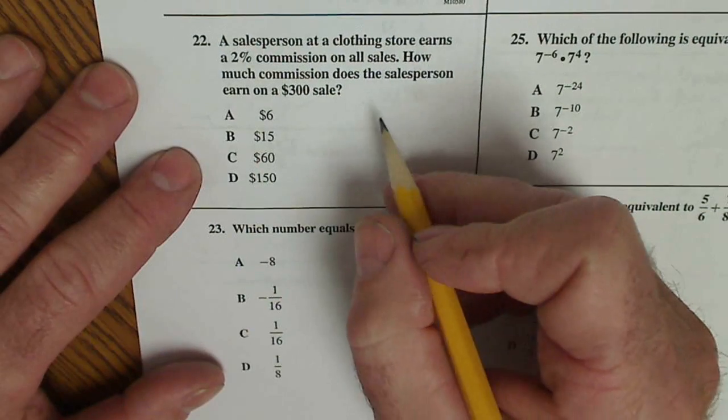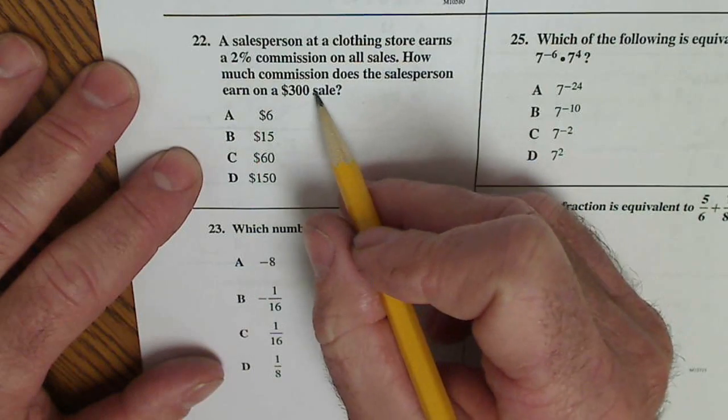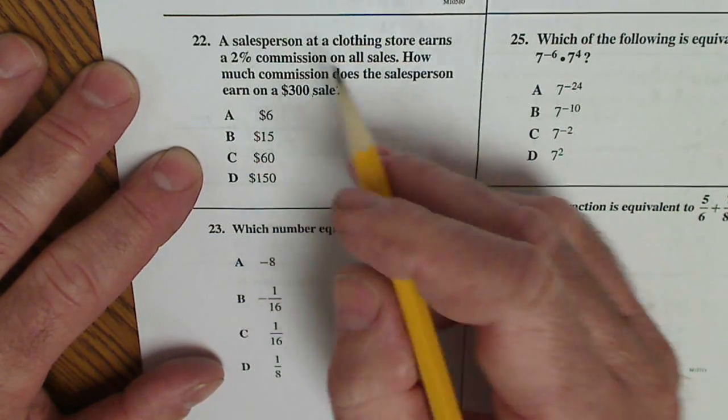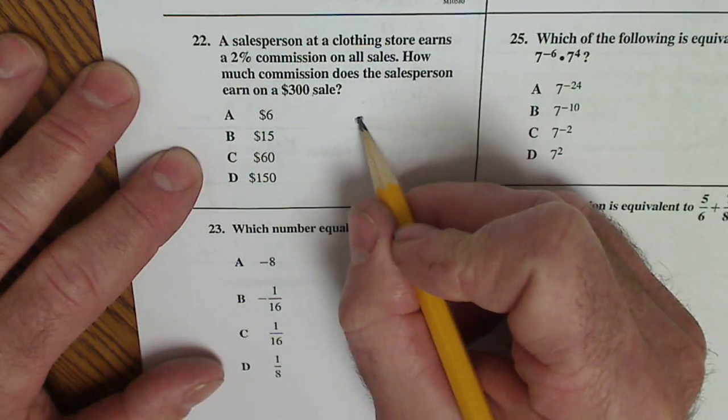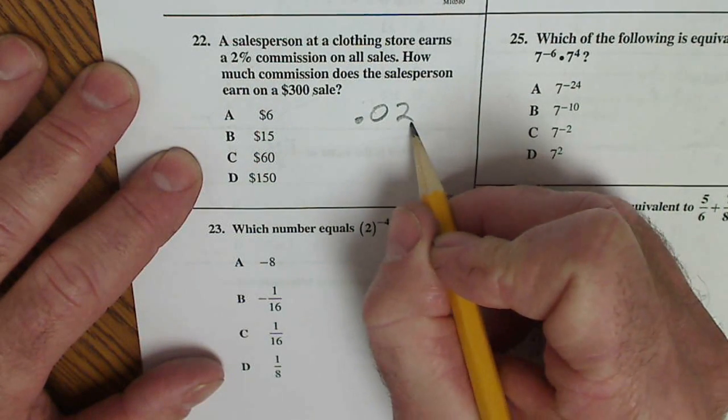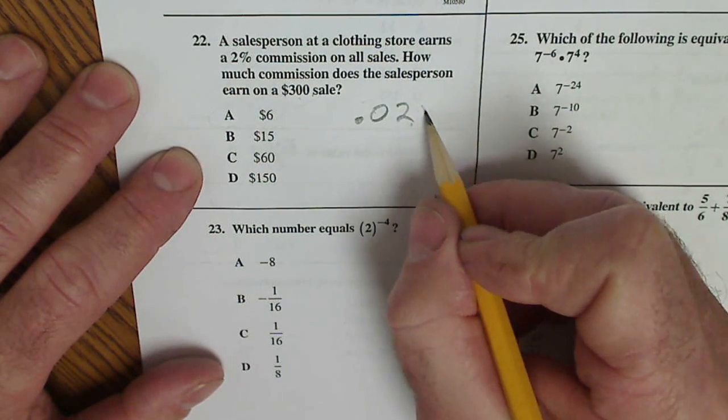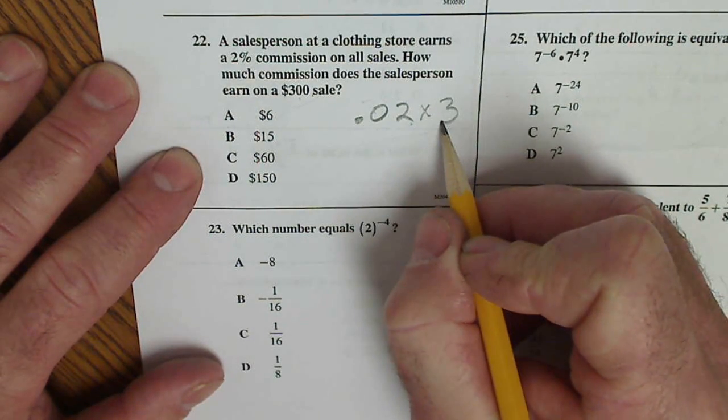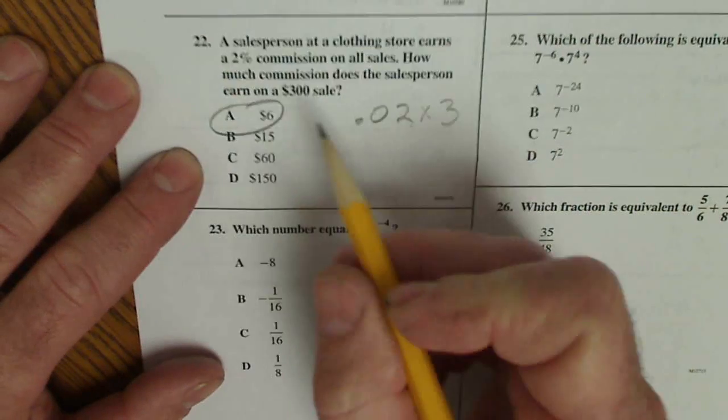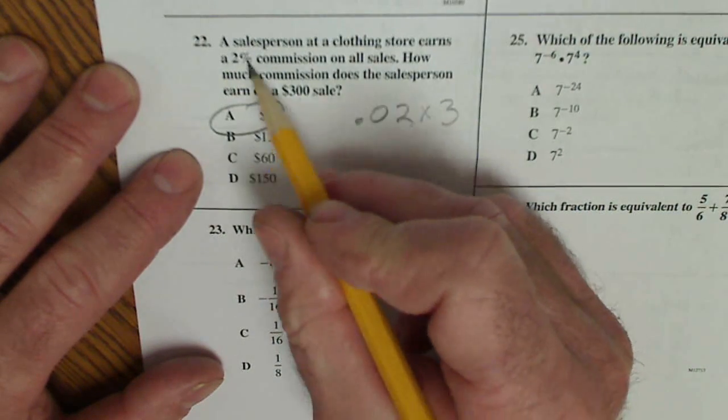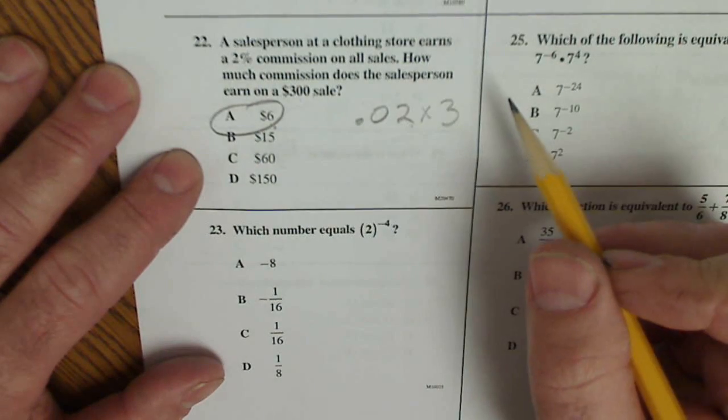On the next one down, kind of the same thing. I have a $300 sale. A salesperson earns 2% commission. I convert that percent to a decimal. So, a 2% commission on $300. So I just do that times 3, and I get 6, and I can see $6. Then I need to think, is that reasonable? For a 2% commission, that seems right as well.